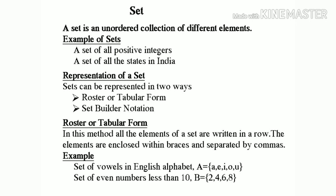Set of vowels: A equal to {a, e, i, o, u}. Set of even numbers less than 10: B equal to {2, 4, 6, 8}.